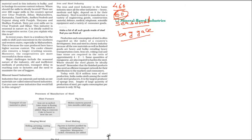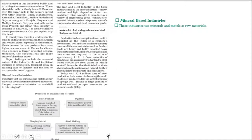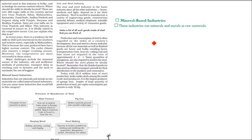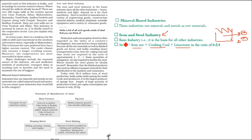Mineral-based industries use minerals and metals as raw material. The most important is the iron and steel industry, which is a basic industry because it provides raw material to many other industries. Steel consists of iron ore, coking coal, and limestone in the ratio of 4:2:1 — that is, 4 parts iron ore, 2 parts coking coal, and 1 part limestone out of 7 total. India is the 9th largest steel producer in the world.